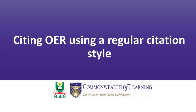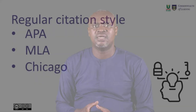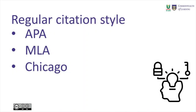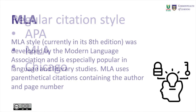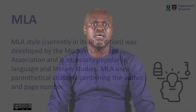Citing OER using a regular citation style means using a regular citation style and adding the Creative Commons license info. If your instructor prefers you cite your resources using a regular citation style — like APA, MLA, or Chicago — then you simply add the Creative Commons License or the Public Domain License info at the end of your regular citation.